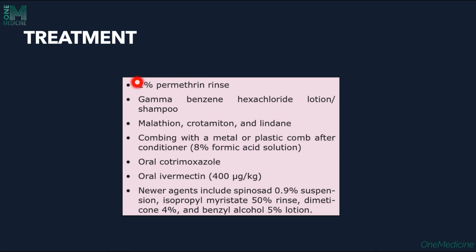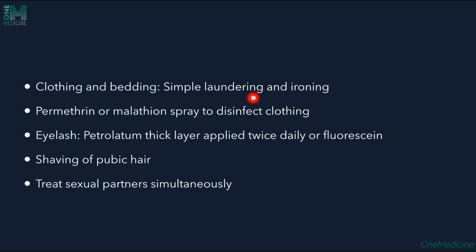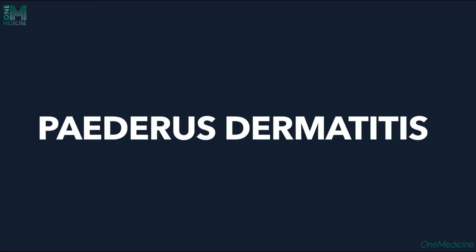1% permethrin shampoo is applied on the scalp for 10 minutes and washed off, and can be repeated after one week. Clothing and bedding need to be washed; simple laundering and ironing can be done. Permethrin-malathion spray is used to disinfect clothing. If eyelashes are involved, a thick layer of petrolatum is applied twice daily. Shaving of pubic hair is advised, and the sexual partner must be treated simultaneously.